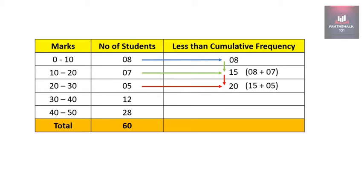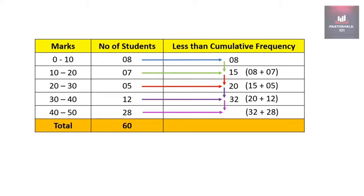For the next less than cumulative frequency we will take 20 and 12, so 20 plus 12 equals 32. And for the next less than cumulative frequency we will take 32 and 28, so 32 plus 28 is 60.